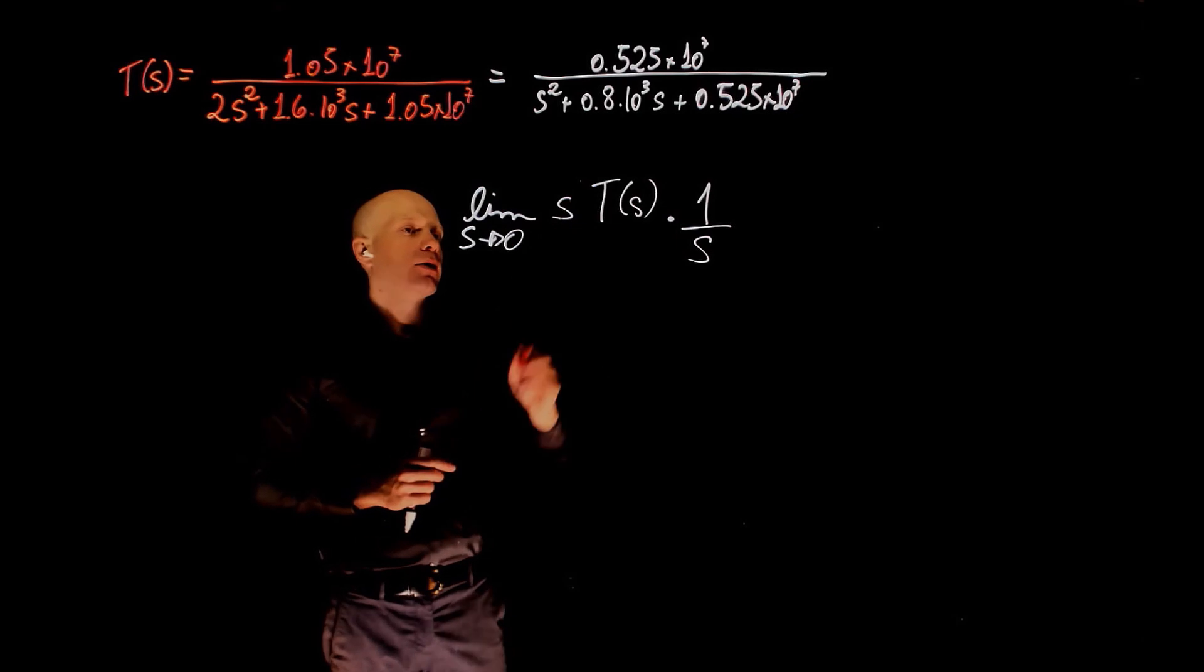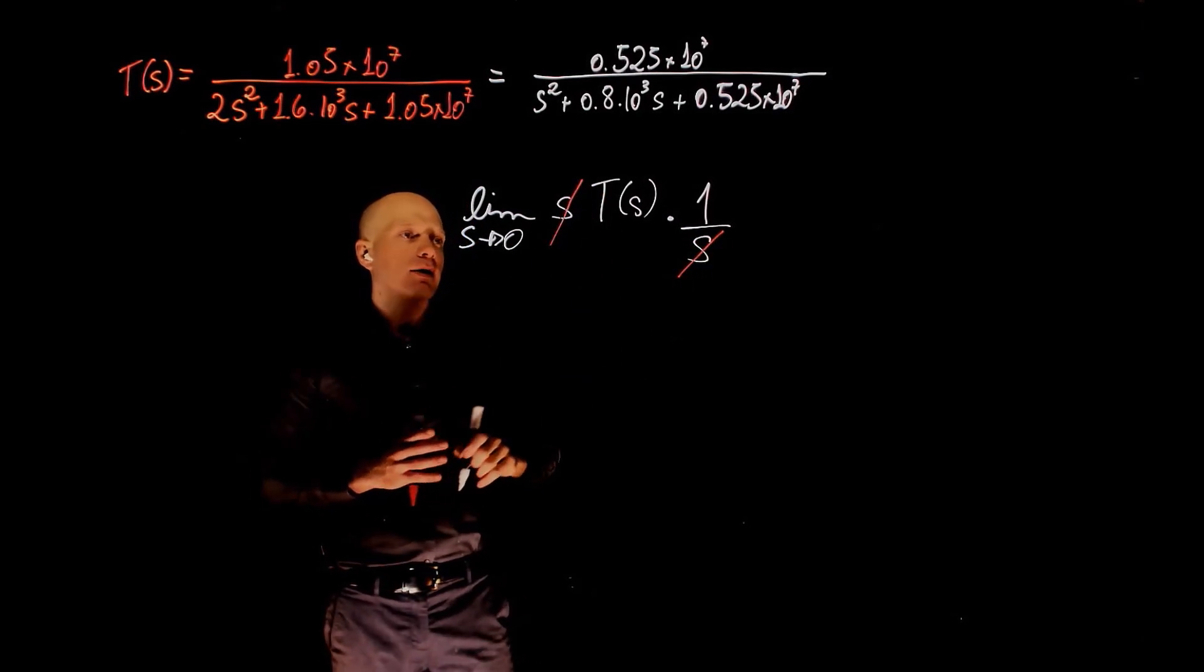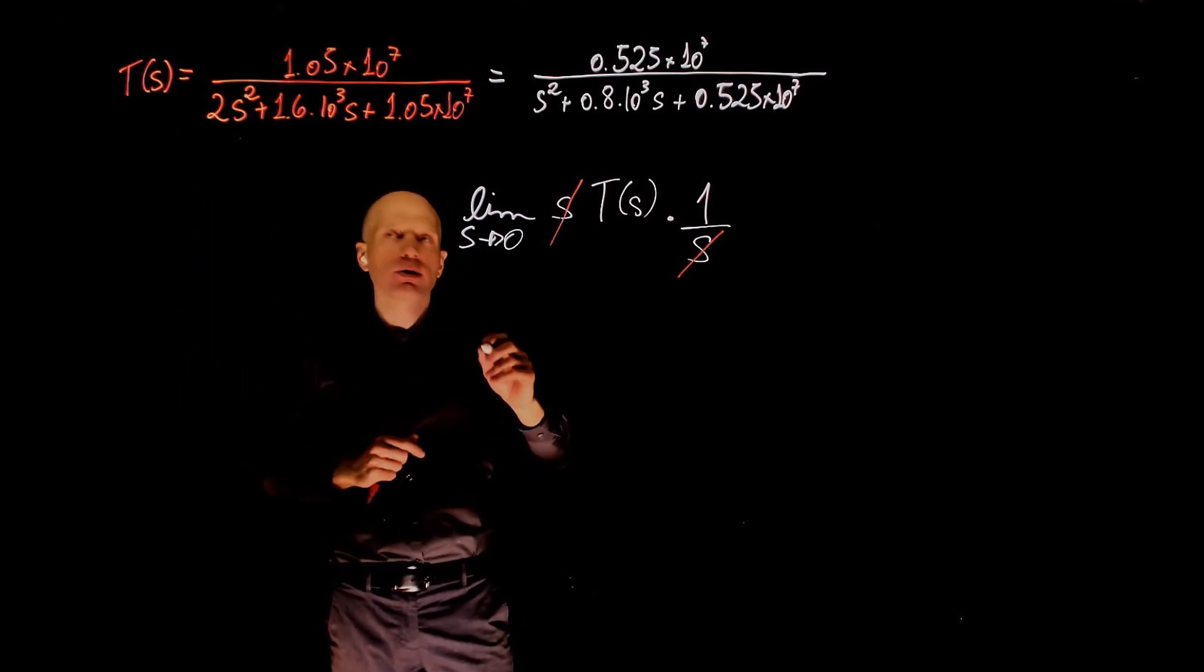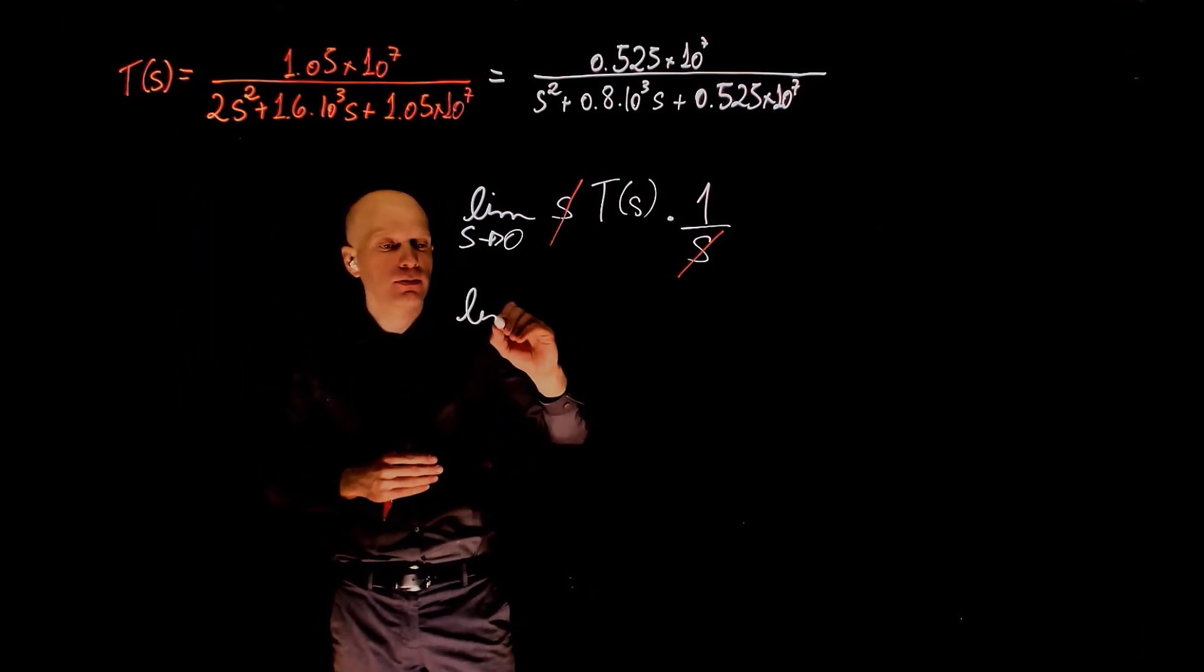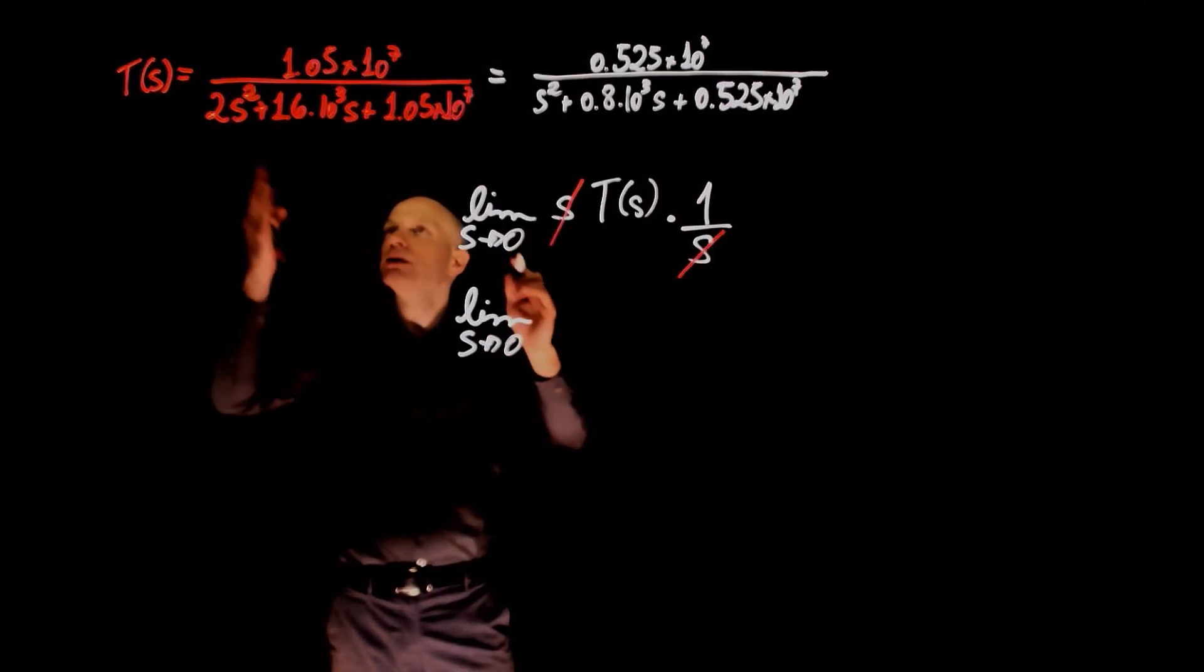Notice that s now from the theorem cancels the step input and the final value or the steady state value of t in the time domain corresponds to the limit when s tends to 0 of simply T of s.